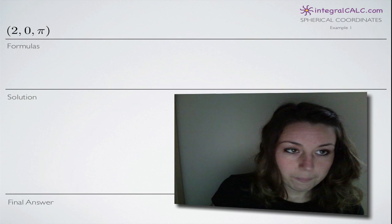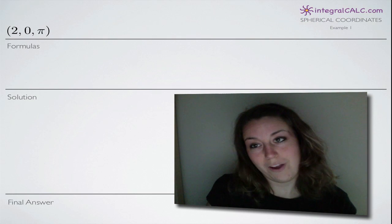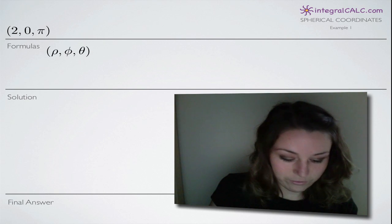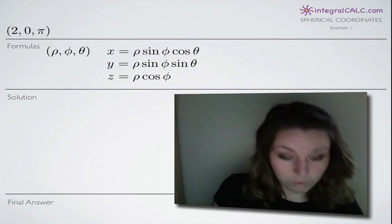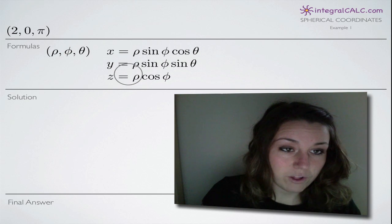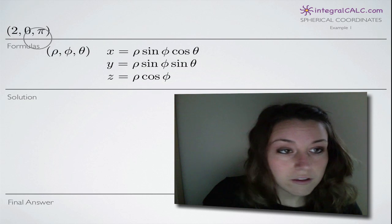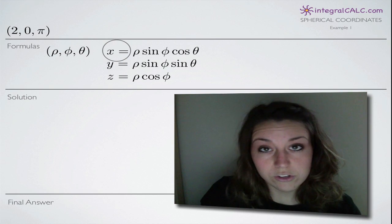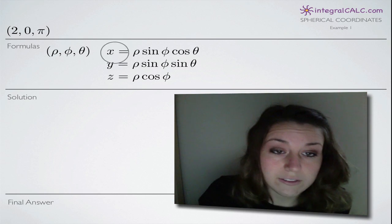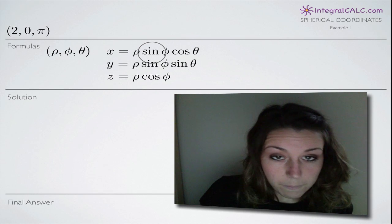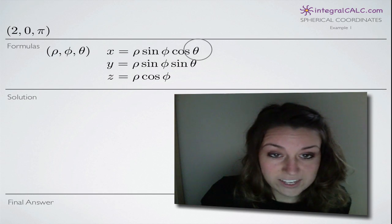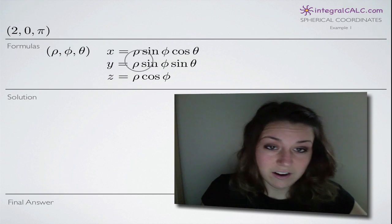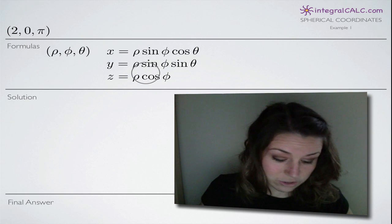As with converting coordinates, no matter what coordinates you're converting, the most difficult part of any problem is remembering these formulas. When it comes to spherical coordinates, we have to remember the following formulas. Our original spherical coordinates are in the form rho, phi, and theta. So to convert to rectangular or Cartesian coordinates, we have these three formulas where rho, phi, and theta are plugged in. All we have to do is plug in the values from our spherical point into these three formulas and it'll give us our Cartesian coordinates back.